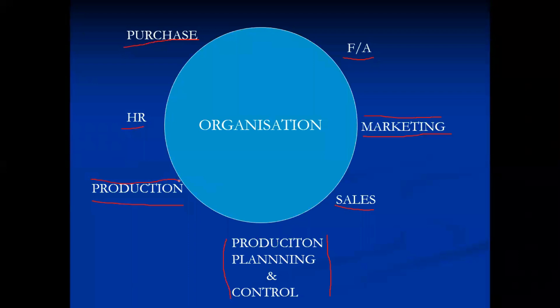At the same time, the production department wants to have optimum stock of materials so that production is not disturbed due to shortage of materials. This creates conflict between the production department and the planning department. In real organizations there are many such conflicts among departments. The top management has to spend its time bringing coordination among them, and as a result cannot concentrate on performance analysis and strategic decision making.